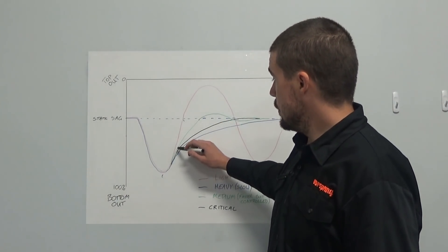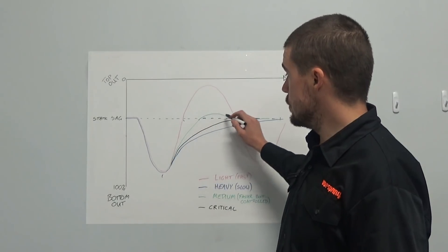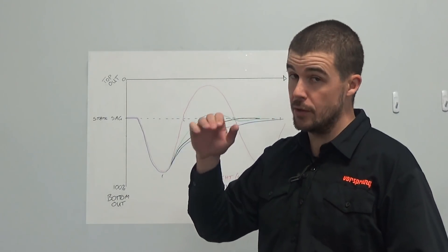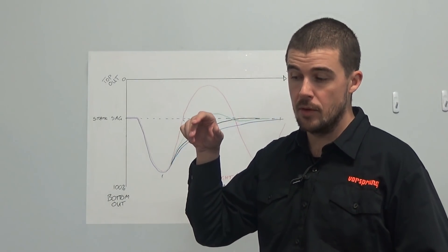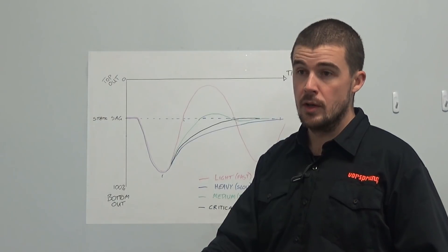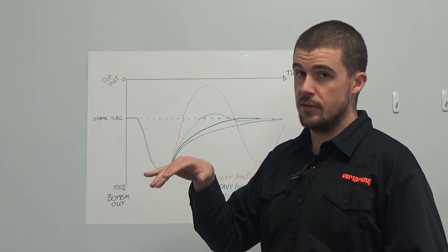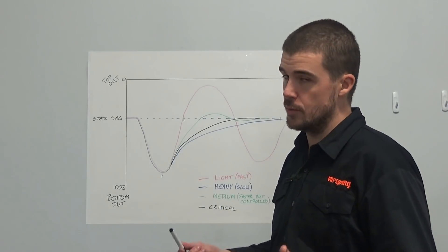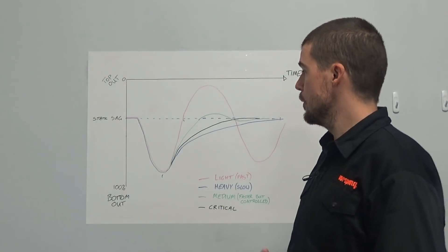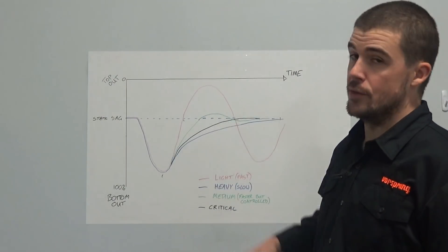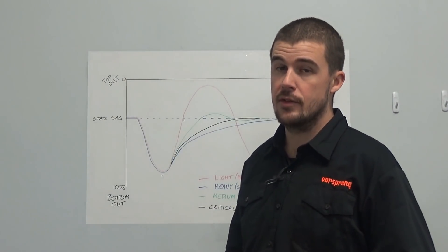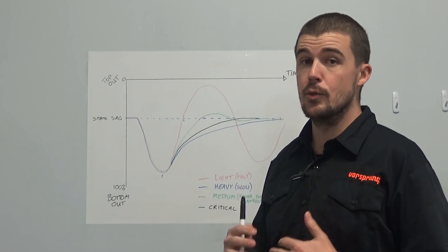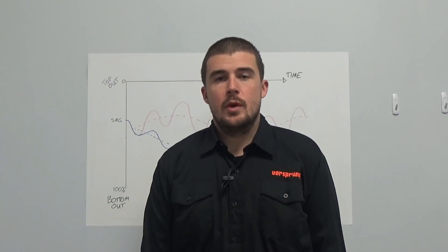What we typically end up with instead is something that does overshoot the sag point. So when we bounce on the suspension, we'll typically notice this. The suspension will extend past the sag point and then settle again. And that might take one or two oscillations, but depending on how you set your bike up, if there is no overshoot of that sag point, then typically we are in a situation where the suspension is too heavily damped in rebound.